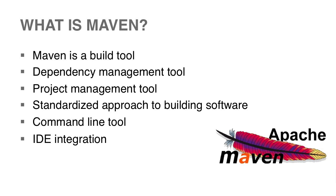The first thing we need to specify is our model version. For Maven 2 and 3, the model version is 4.0.0 — this needs to be included within every pom.xml file. Then there are three other tags that need to be included — the only required tags. The first one is the artifact ID, and for this we're just going to specify our artifact as Maven Examples. Next, we specify the group ID as com.infiniteskills.maven — you'll notice we're using periods almost like a package declaration for our group ID. Finally, we specify our version as 1.0.0. With all this in place, we are then able to compile our files.